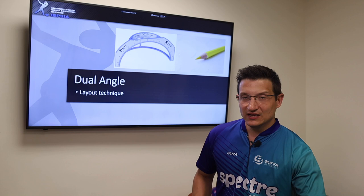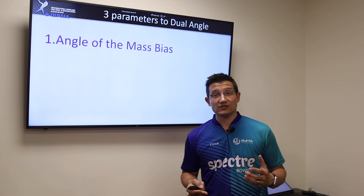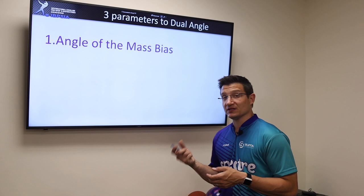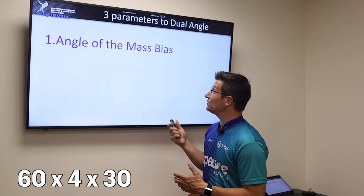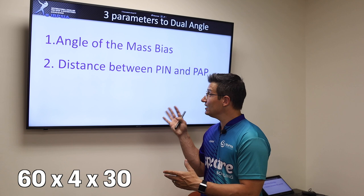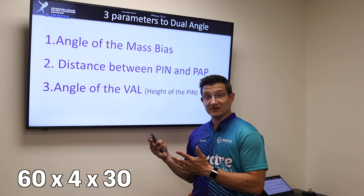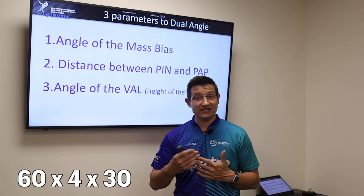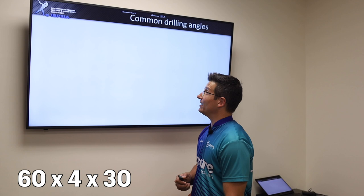When we're talking dual angle, there are three numbers that encompass a dual angle layout. The first number — let's say 60 by 4 by 30 — is what we call the angle of the mass bias, or the drilling angle. Next up in that equation is the distance between the pin and PAP. And third is that 30 degree number — the angle of the BAL, or basically the height of the pin versus the fingers, and how that affects ball reaction.